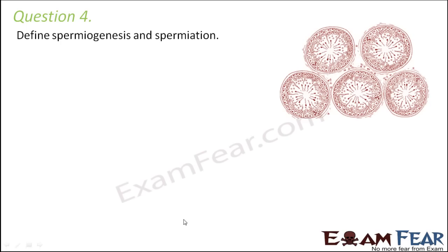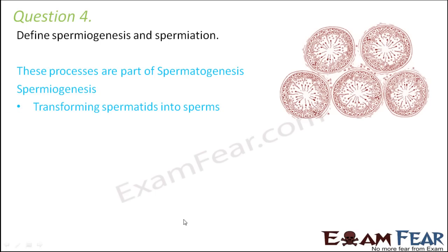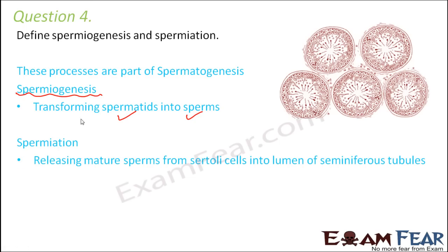Question four: define spermiogenesis and spermiation. Both are part of spermatogenesis but refer to two different steps. Spermiogenesis is the transformation of spermatids into sperms. Spermiation is the process where mature sperms get released from the Sertoli cells into the lumen of the seminiferous tubules. So spermiogenesis is the transformation of spermatids to sperms, and spermiation is their release.